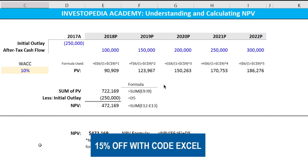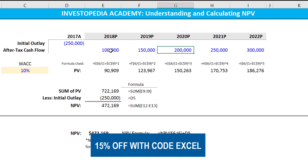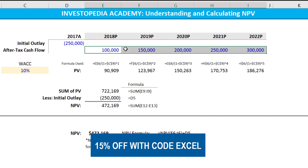Net present value is a core component of capital budgeting and is a comprehensive way to determine whether a proposed project will add value or not. When we think about a capital expenditure or a project, we always have an initial outlay — that's the upfront expense to build the factory, to do the project. Then we estimate what our after-tax cash flows are in year one, year two, and so on. The devil's in the details: if we have poor estimations of the after-tax cash flows, that will affect our net present value. But that's a subject for a different day.